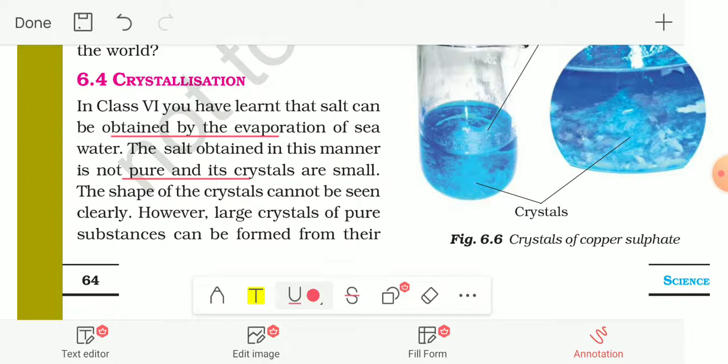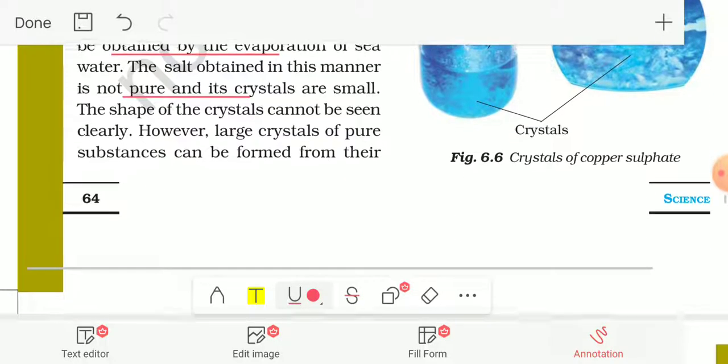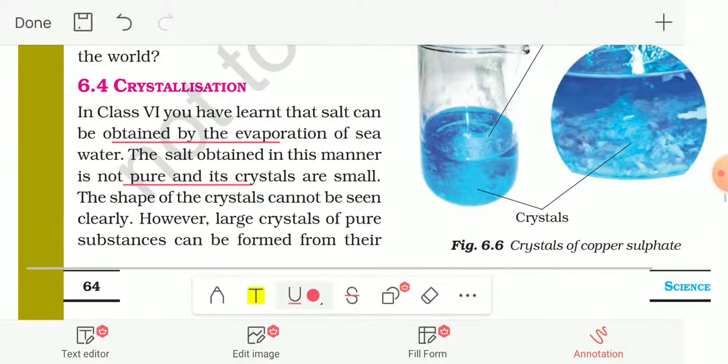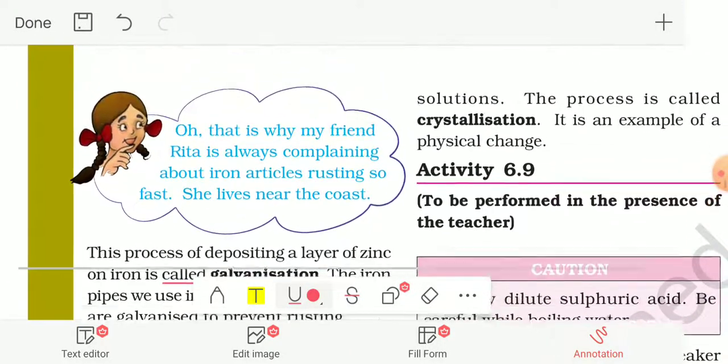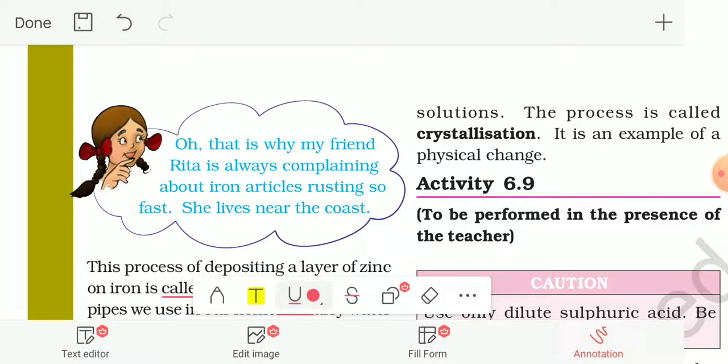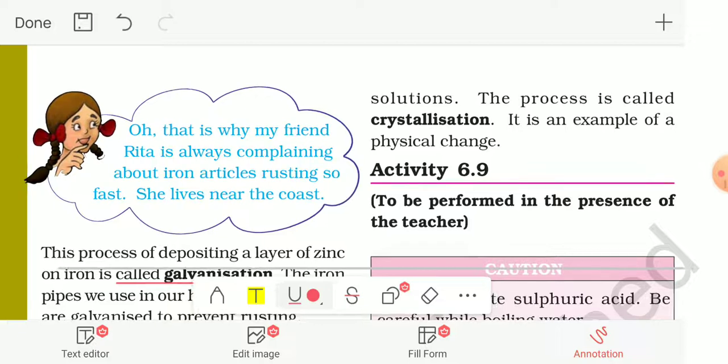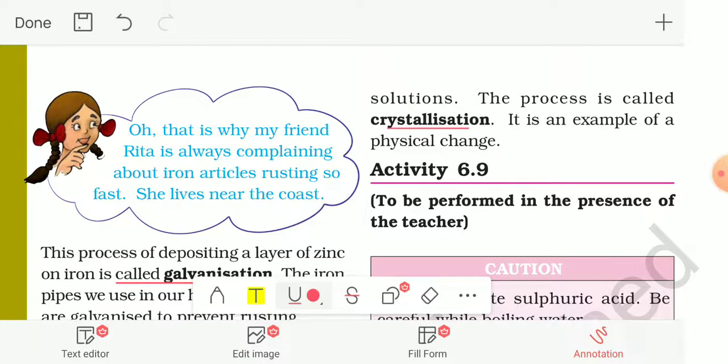However, large crystals of pure substance can be formed from their solution. This process is called crystallization. That is why crystallization is an example of a physical change.